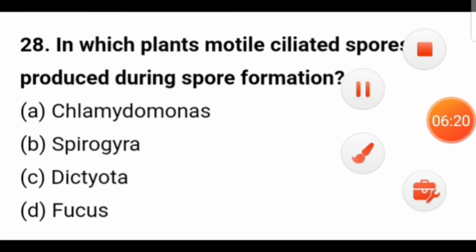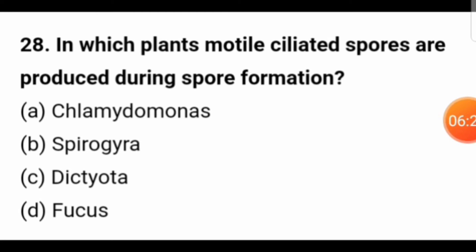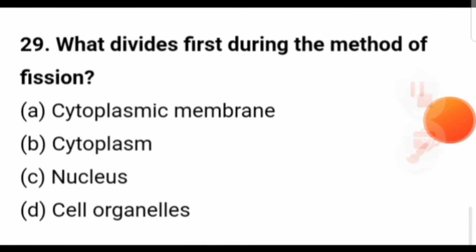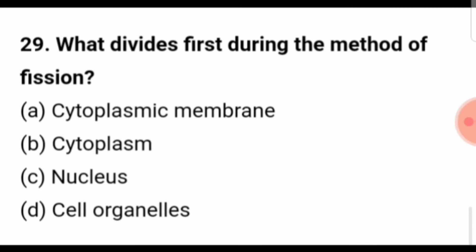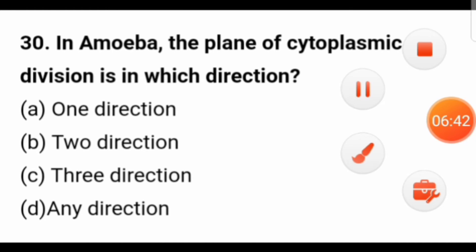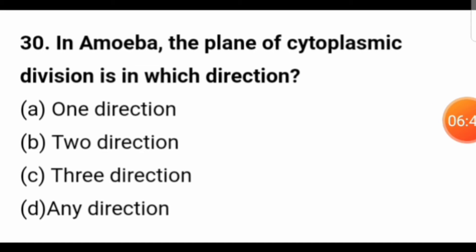In which plant are motile ciliated spores produced during spore formation? The right answer is Chlamydomonas — motile ciliated zoospores are formed. What divides first during the method of fission? During fission, the nucleus divides first. In amoeba, the plane of cytoplasmic division is in which direction? In amoeba, cytoplasmic division can occur in any direction.